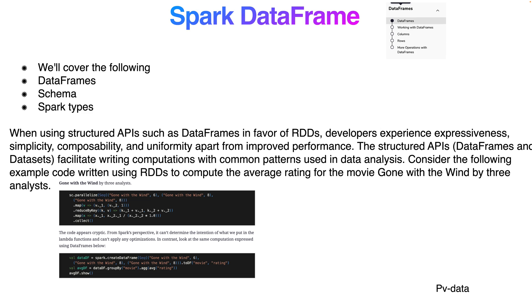Before DataFrames, let's look at how code looked when using the Structured API directly — using parallel sequences, map and reduce. Then we compare that with using DataFrames. The Structured API includes DataFrames and Datasets. Consider an example written using RDDs to compute the average rating of a movie — there is a version using RDDs and another using DataFrames.